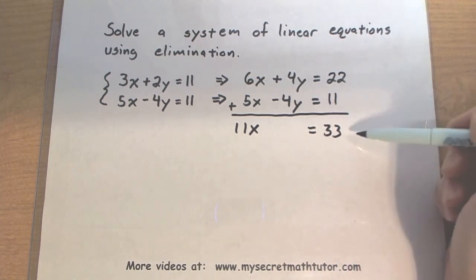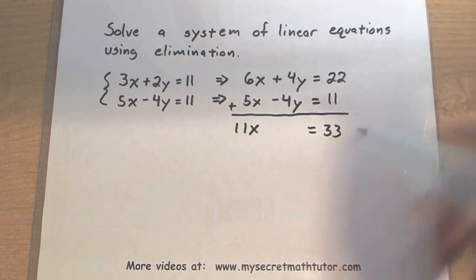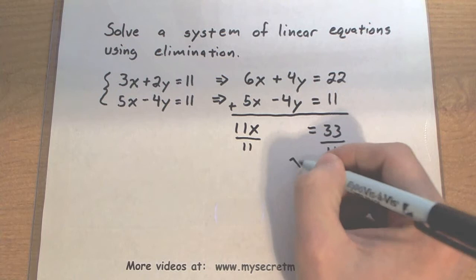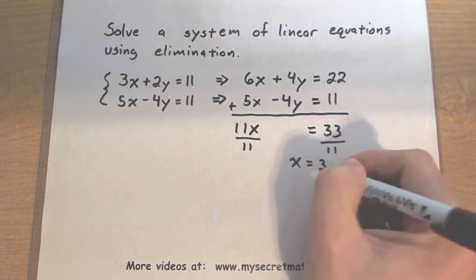Now what I'm left with is a really nice equation. It only has x in it, and I can solve. So let's divide both sides by 11. This will give me that x is equal to 3.